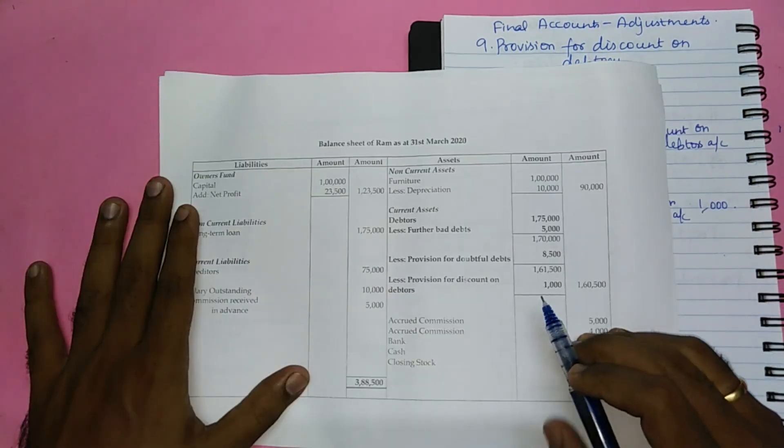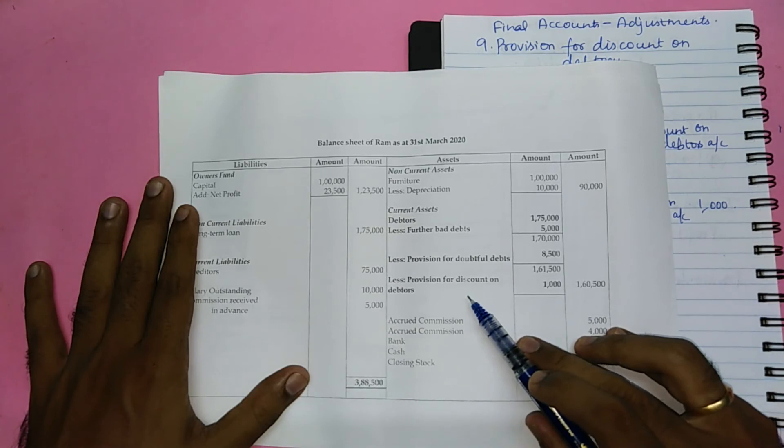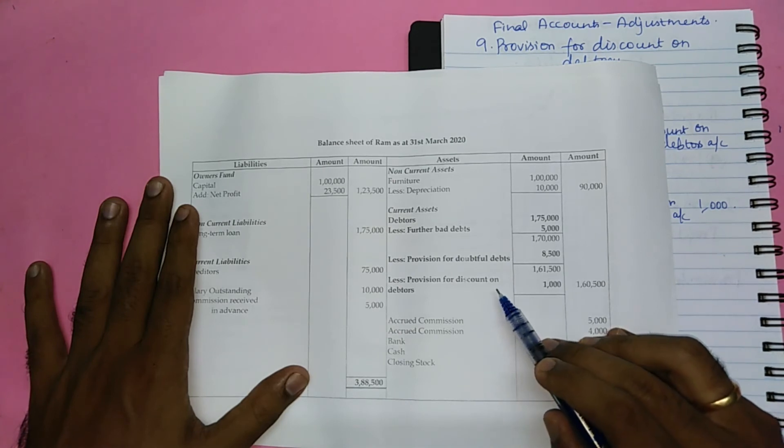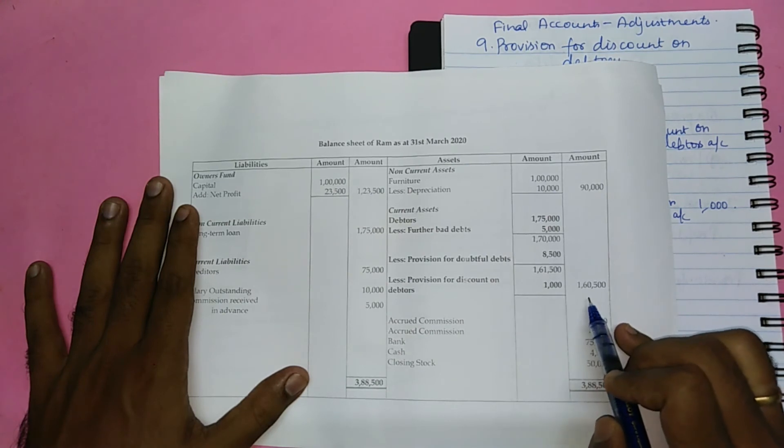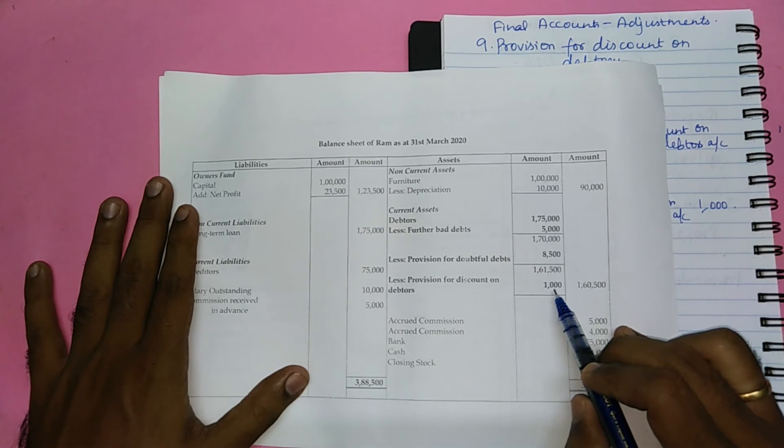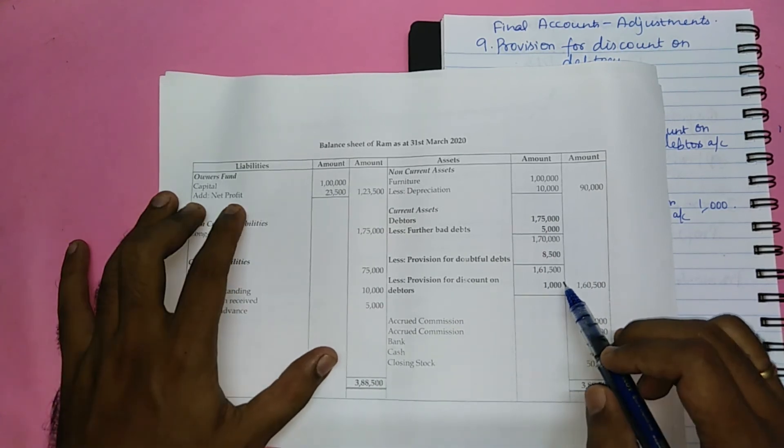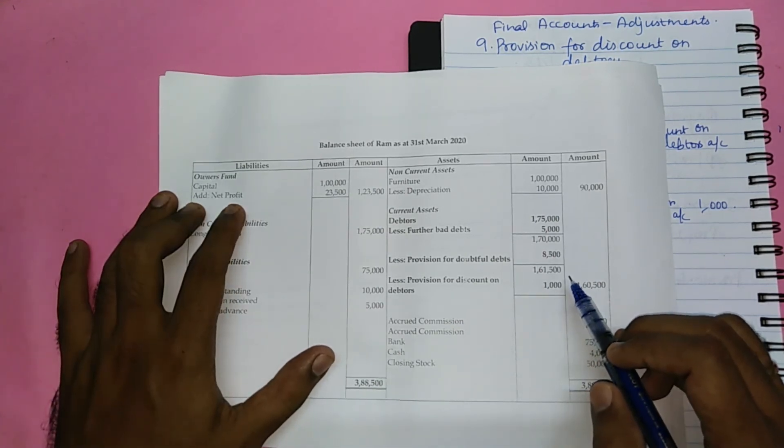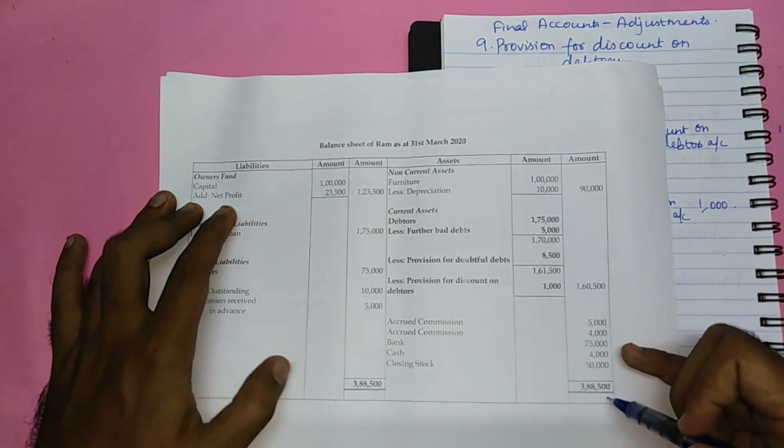In the balance sheet, provision for discount on debtors is shown as a deduction in debtors. As a result, now the debtors amount to Rs.160,500. Therefore, in the asset side, there is a reduction of Rs.1000. In the liabilities side, Rs.1000 gets reduced as a result of the reduction of net profit. Therefore, the balance sheet gets tallied.